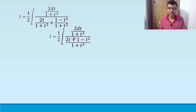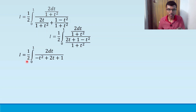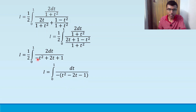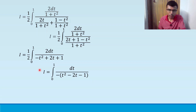The (1 + t²) terms cancel, leaving I = (1/2) integral from 0 to 1 of 2 dt / (-t² + 2t + 1). The 2s also cancel, giving I = integral from 0 to 1 of dt / (-t² + 2t + 1). Taking minus common from the denominator: I = integral from 0 to 1 of dt / minus of (t² - 2t - 1).